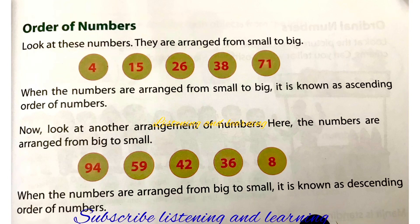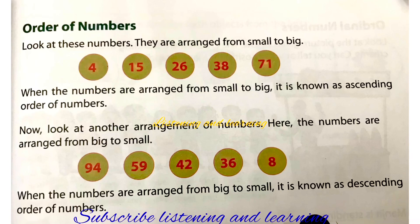Now check the second example. How are the numbers arranged here? Here the numbers are arranged from big number to small number. That is, when the numbers are arranged from big to small, it is known as descending order of numbers. The numbers here are 94, 59, 42, 36, 8. The biggest number comes first and the smallest number comes last, that is 8.